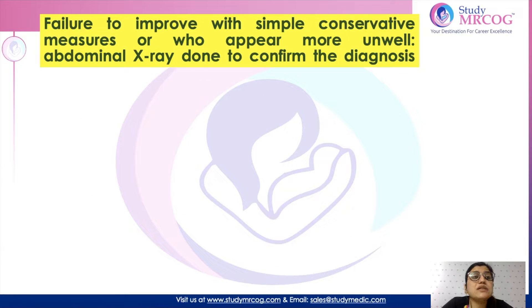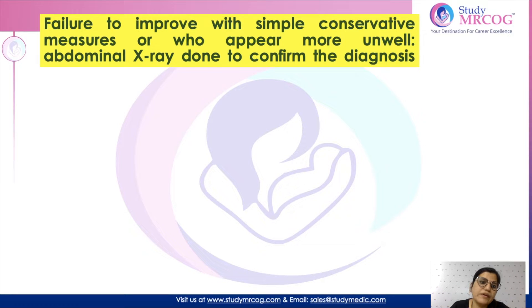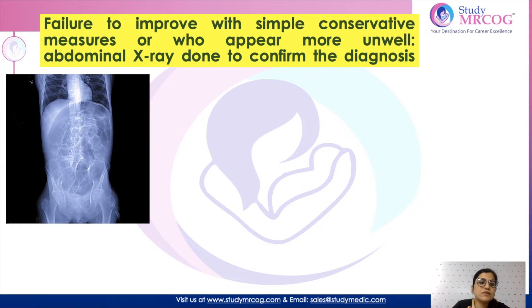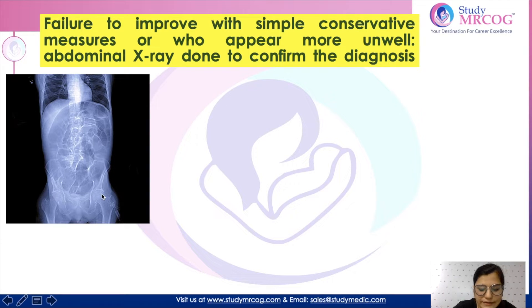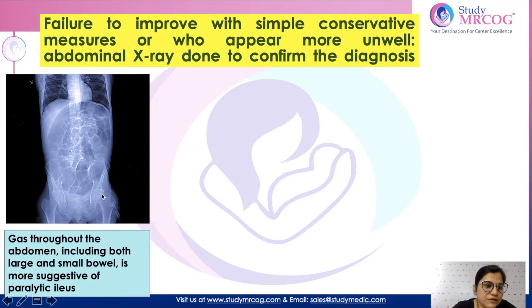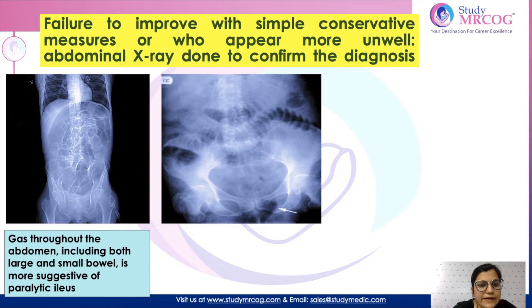If the patient doesn't improve after these conservative measures, then you have to think of more serious causes, and to rule them out, you will order an abdominal X-ray. This is how post-op ileus looks on imaging — both small and large bowel loops are dilated, and you see gas throughout the abdomen including both large and small bowel. This is paralytic ileus.